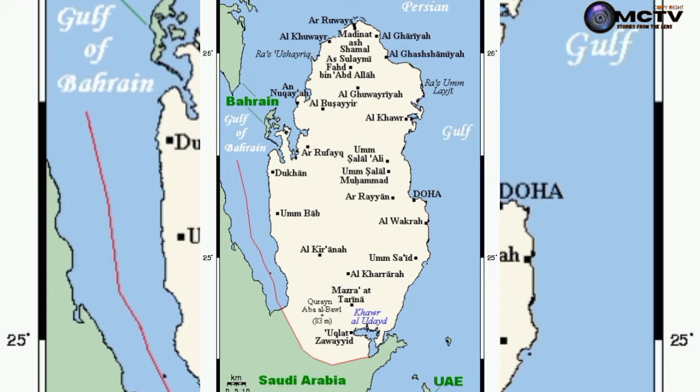The coastline of Qatar is 563 km, which is 350 miles. Its borders include Saudi Arabia, which is 60 km, as well as the UAE and Bahrain.